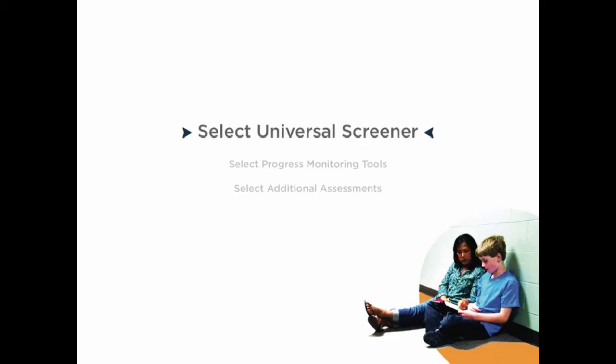Select and utilize a reliable and valid universal screener. When selecting a screener, consider the following: What universal screening tool is most appropriate for the school's population? How does the team use this data to think about core instruction? How does the team use this data in addition to teacher observation to determine who may need additional assistance?